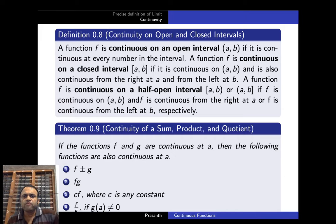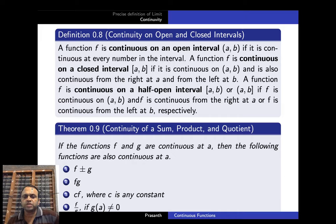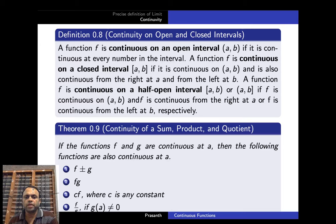Just as in the case of limits, we can define the continuity of sums, products, and quotients of functions. The theorem states: if f and g are continuous at a, then f ± g, f·g, and c·f (where c is any constant) are also continuous at a. Also, f/g is continuous at a provided g(a) ≠ 0.